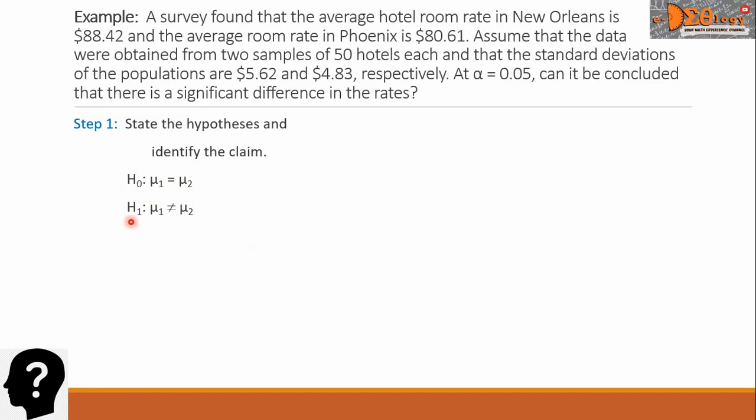And then H sub 1, this is the alternative hypothesis: mu sub 1 is not equal to mu sub 2. In this problem, the alternative hypothesis is the claim.